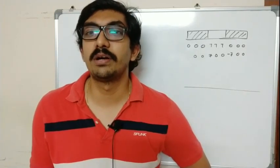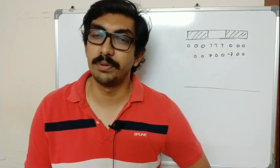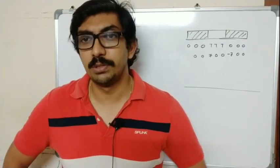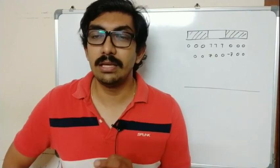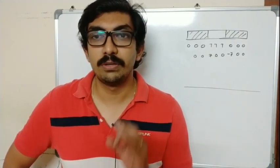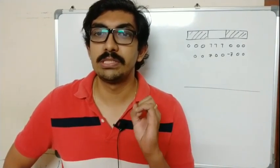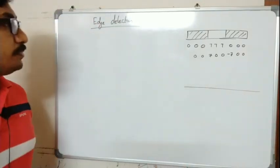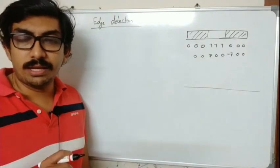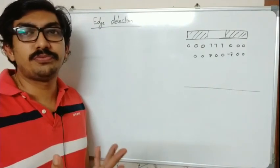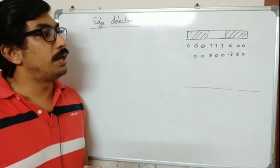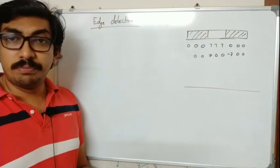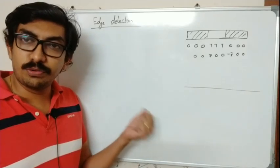In today's session we are going to see a topic from computer graphics, module 6: edge detection. It is a very frequently asked question. There are three gradient operators used to find edges — Roberts, Prewitt, and Sobel. Before going into those, we will see what an edge is, the advantage of finding edges, and the different methods. By finding edges we get a lot of features about the image.